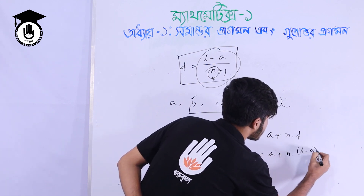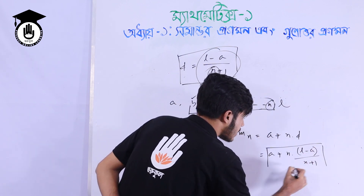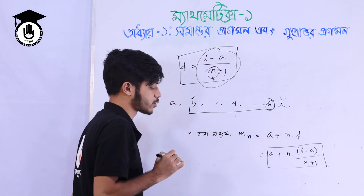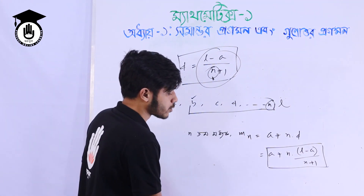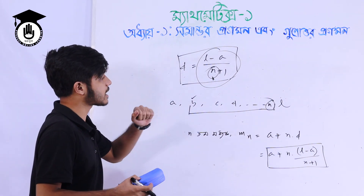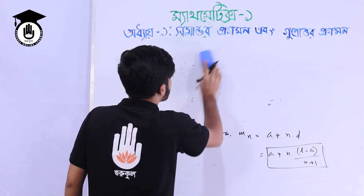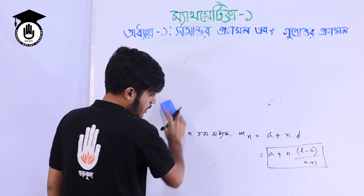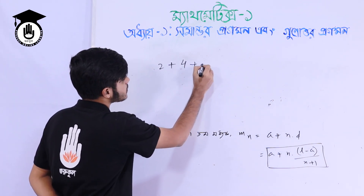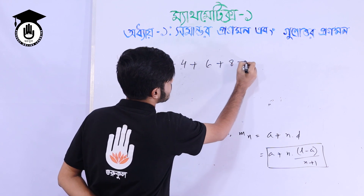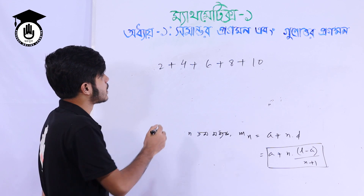l minus a by n plus 1 — that is the formula. Our n-th middle term formula, as you can see, is quite complex but let's apply it.